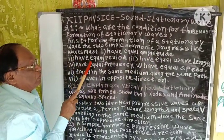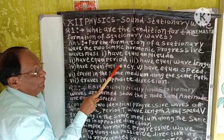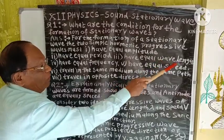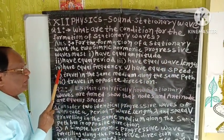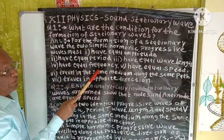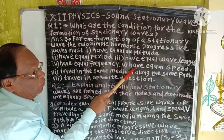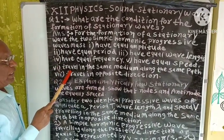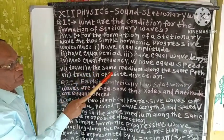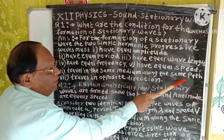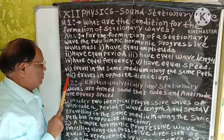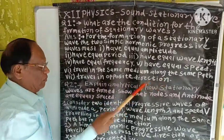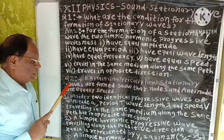Second point: have equal period. Third point: have equal wavelength. Fourth point: have equal frequency. Fifth point: have equal speed. Sixth point: travel in the same medium along the same path. Seventh point: travel in opposite directions.